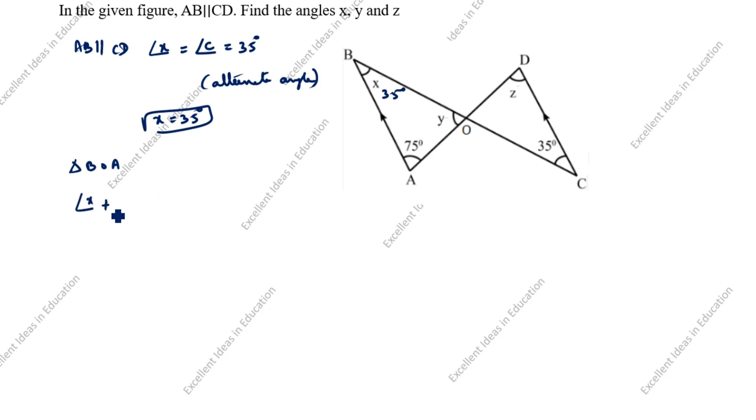Angle X plus 75 degrees plus angle Y is equal to 180 degrees. Angle X now we calculated is 35 degrees plus 75 degrees plus angle Y equals 180 degrees. 35 plus 75 is 110 degrees plus angle Y equals 180 degrees. Y is equal to 180 minus 110 which equals 70 degrees.